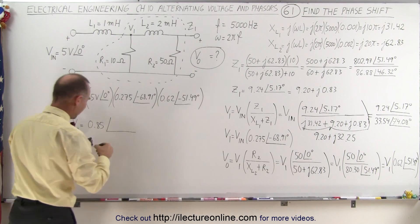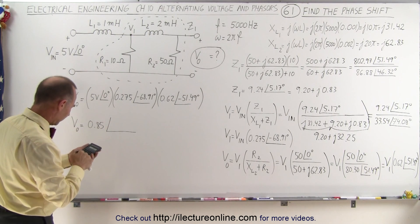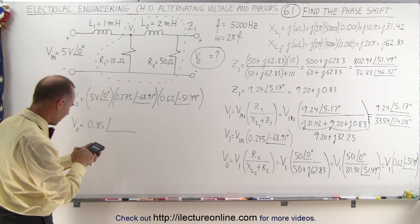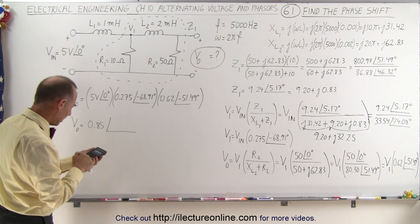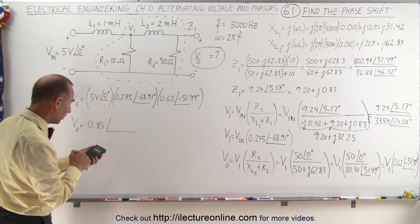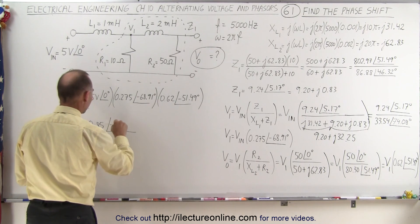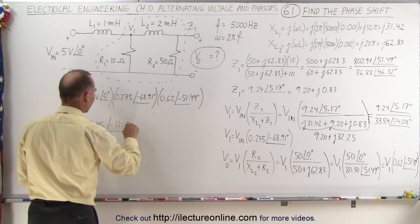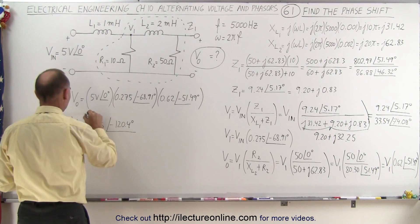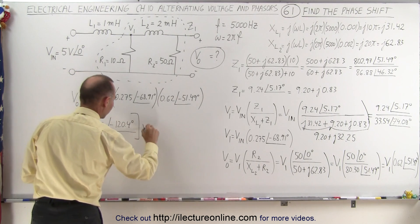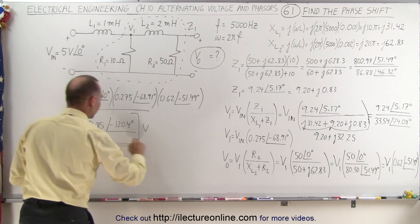With a phase angle of minus 68.91 minus 51.49, equals minus 120.4 degrees. Minus 120.4 degrees, and of course that's in terms of volts. So there's your output voltage.